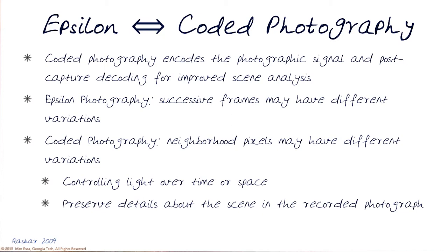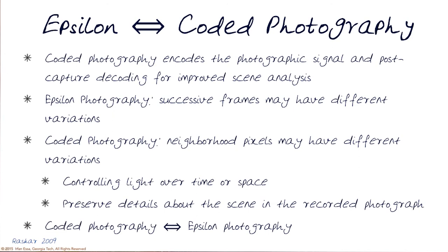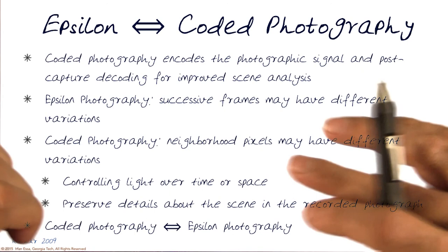Because now we can capture a series of images that actually has those variations either in space or in time, and we can preserve details about the recorded environment. In essence, there's this big space between coded photography and epsilon photography. Both of them are useful, and they may even overlap a little bit in terms of what they can do.